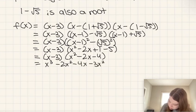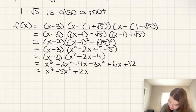And then I will expand that. So we're going to get x cubed minus 2x minus 4x minus 3x squared plus 6x plus 12, which is equal to x cubed minus 5x squared plus 2x plus 12.